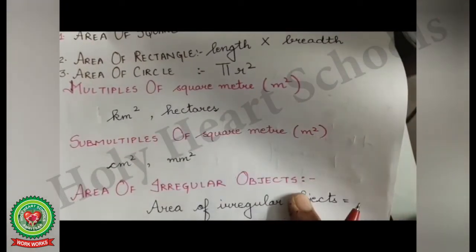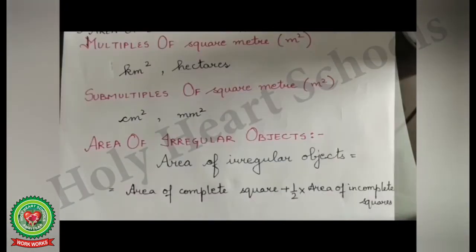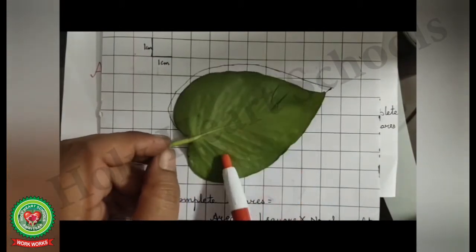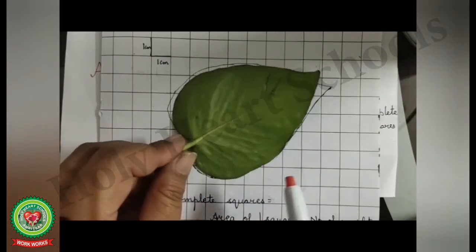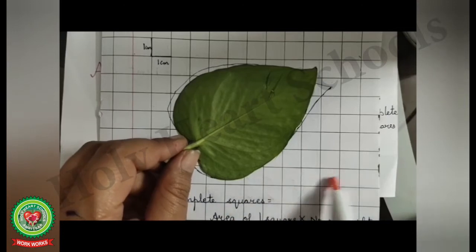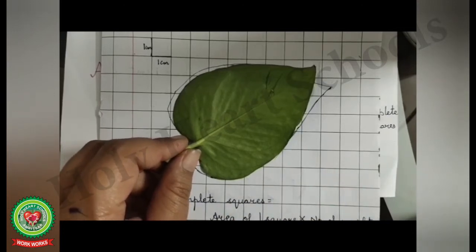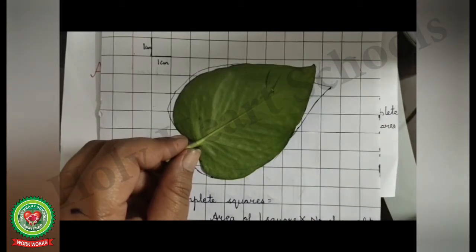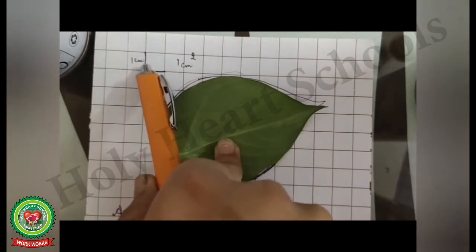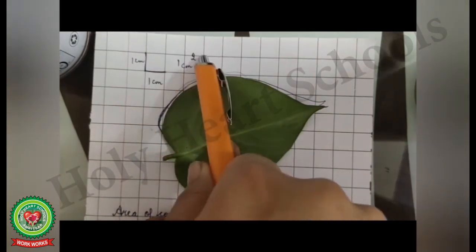Now we are going to discuss the area of irregular objects. Let's perform an activity: suppose I want to find the area of this leaf, which is an irregular object. For this, you can use either a graph paper or any square sheet paper whose each box is of the same width — that is, the area of each square is the same. I have taken a sheet whose side of each square is one centimeter.